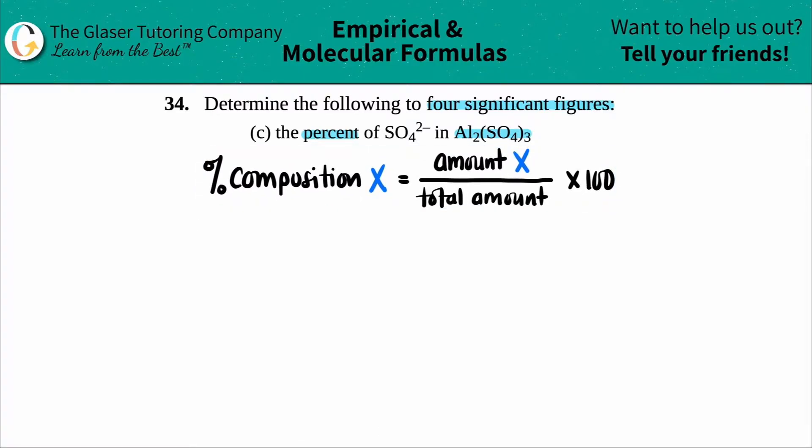Whenever you're trying to find the percent of either an element or part of a compound—in this case we're talking about multiple elements—we find that amount and divide it by the total amount. Any percent is always a part divided by the whole, then multiplied by 100.